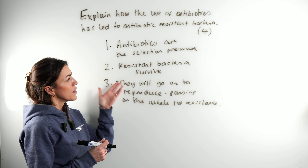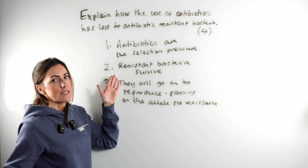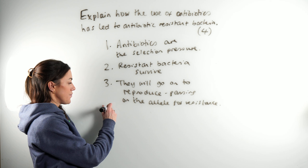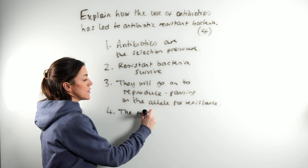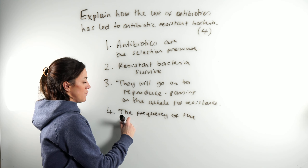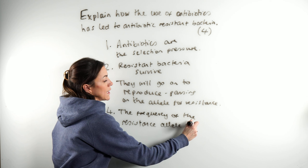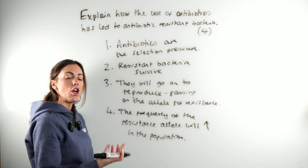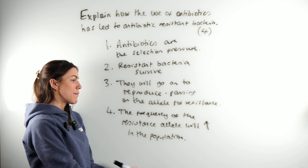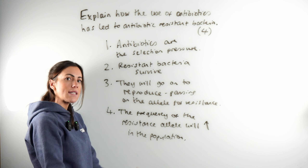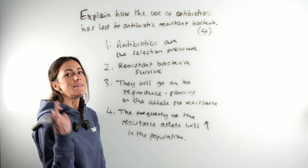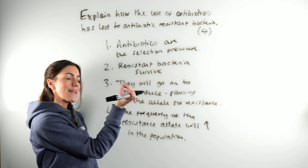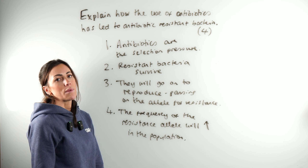The resistant bacteria survive — or the non-resistant bacteria die, which is just the converse. Those bacteria will go on to reproduce, passing on the allele for resistance. And finally, the frequency of the resistance allele will increase in the population. It's the frequency of the allele that gave resistance — the advantageous allele — that will increase in frequency, because that's the one that enabled them to survive and reproduce.